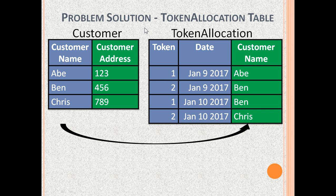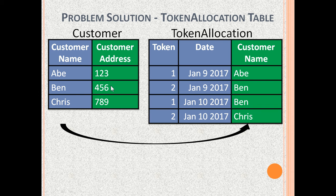In order to convert the Token Allocation Table to 3NF, customer address has to be taken out of it. The table is broken into two tables. First, we have the Customer Table with columns Customer Name and Customer Address, where Customer Name is the candidate key and Customer Address depends on it. The remaining Token Allocation Table has columns Token, Date, and Customer Name, with Token and Date together as the candidate key.